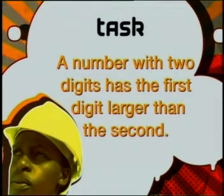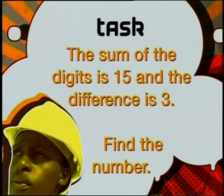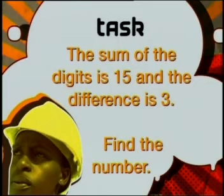Here is a task for you: use a graph and one of the algebraic methods and compare your solutions. A number with two digits has the first digit larger than the second. The sum of the digits is 15 and the difference is 3. Find the number.